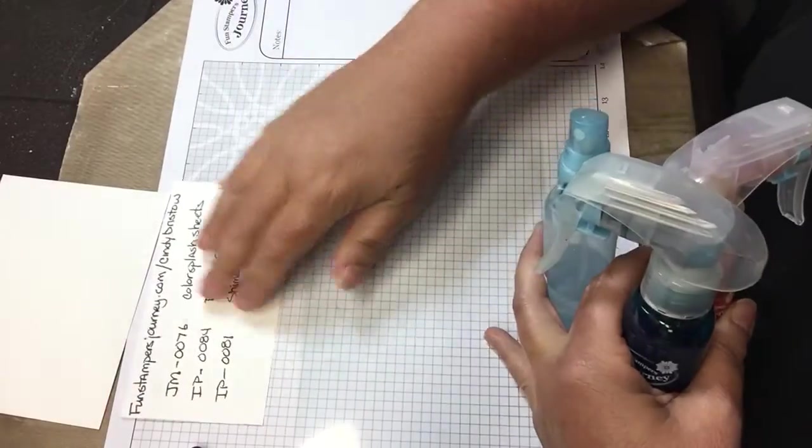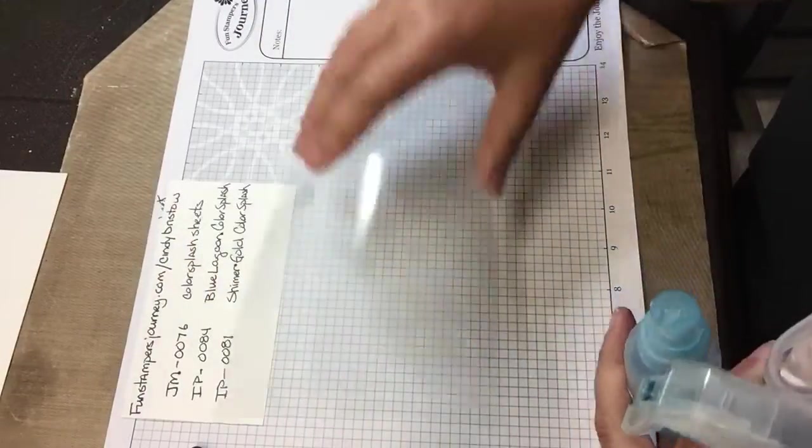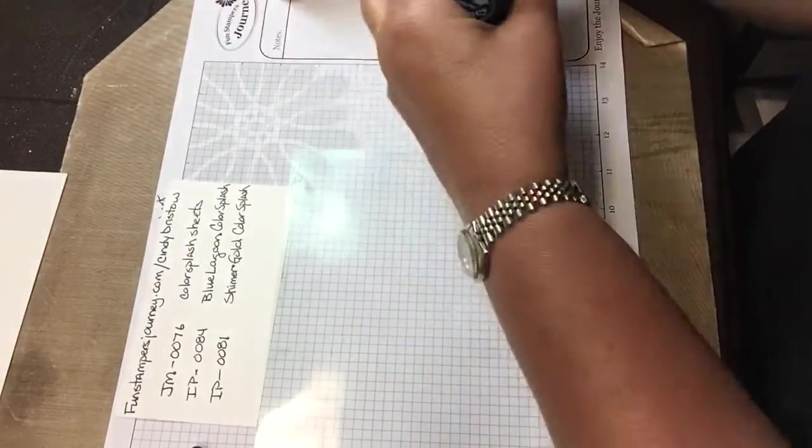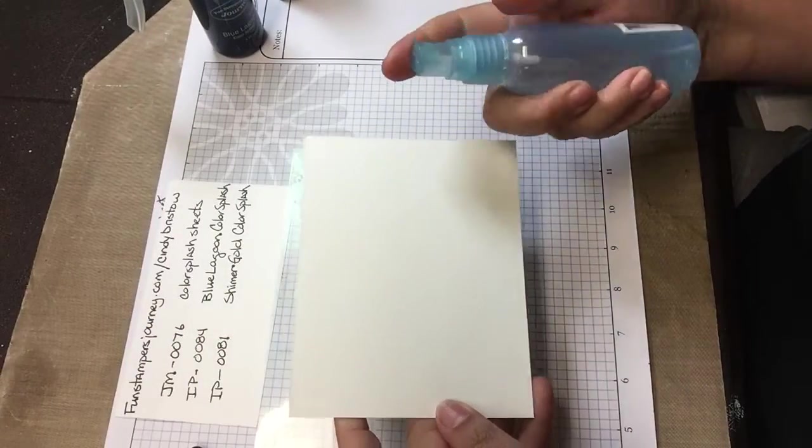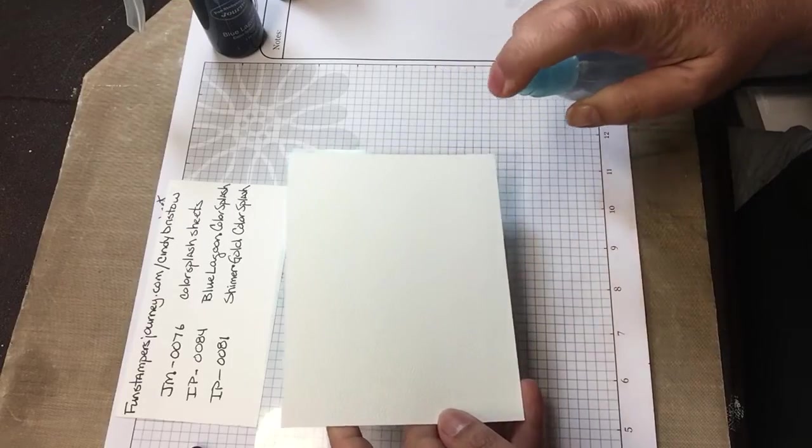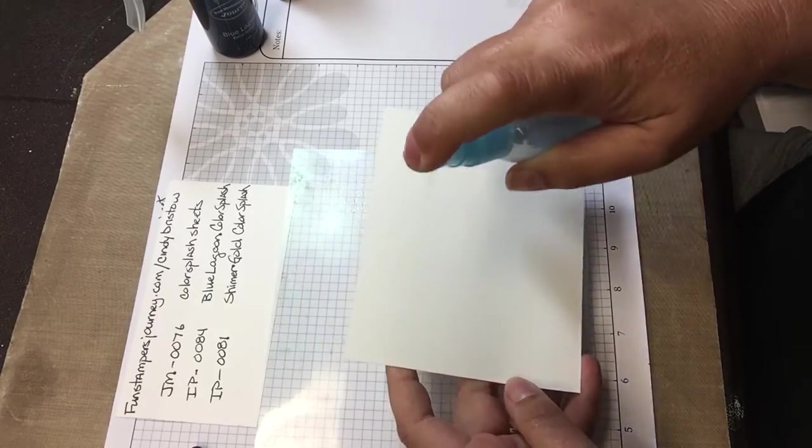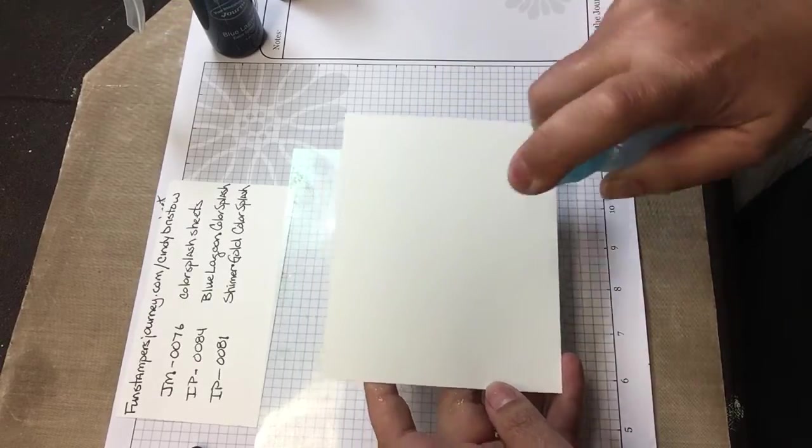So what you start with is you put your clear sheet of plastic down and you take your sheet of the color splash watercolor paper and you saturate it with water. You spray it with water and set it aside.